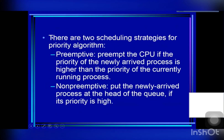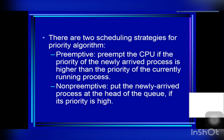Priority scheduling can be either pre-emptive or non-pre-emptive, just like shortest-job-first scheduling. With pre-emptive scheduling, when a newly arrived process enters the ready queue, its priority is compared with the priority of the currently running process. A pre-emptive priority scheduling algorithm will pre-empt the CPU if the priority of the newly arrived process is higher than the priority of the currently running process. With non-pre-emptive priority scheduling, the newly arrived process is placed at the head of the queue because its priority is higher than the currently running process.